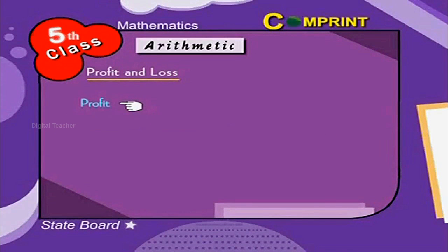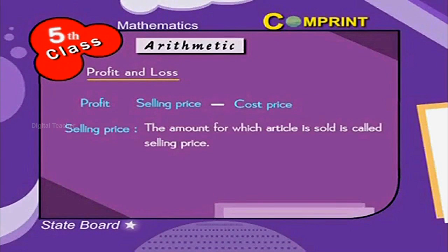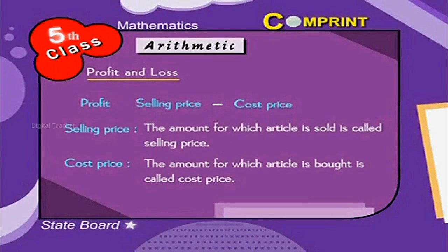Profit: Selling price minus cost price. Selling price: The amount for which article is sold is called selling price. Cost price: The amount for which article is bought is called cost price.